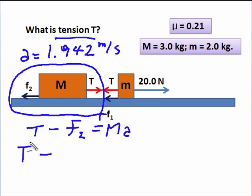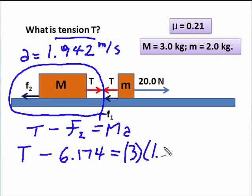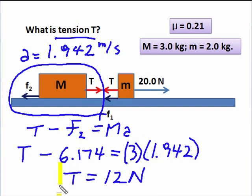And now we work it out: T minus—we already worked out what F2 is—and we write down 6.174 newtons, of course. And that equals M, only big mass M there, 3 times the acceleration. And we'll use the longer number, 1.942. When you solve, you will find that the tension equals—take your calculator and confirm this answer—12 newtons. Make sure that you understand how we got the 12 newtons.